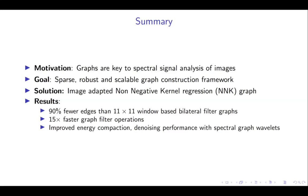The resulting image graphs have far fewer edges than standard approaches. For example, a proposed graph construction framework produces a 90% reduction in edges compared to a standard 11 by 11 window-based graph. This consequently speeds up graph filtering operations by a factor of at least 15.